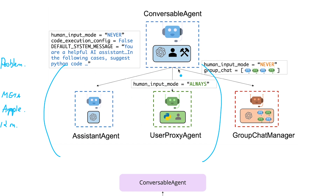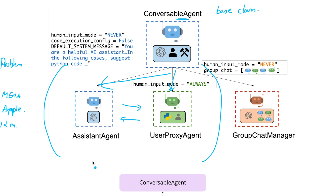We'll create a user proxy agent and an assistant agent. As we can clearly observe from this block diagram, both assistant agent as well as user proxy agent are extending from conversible agent, which is our base class. The conversible agent has the innate ability of enabling conversations and exchanging messages between agents. Since all the properties and attributes specific to conversible agents are inherited by both assistant and user proxy agents, they can exchange messages and resolve any issues between themselves.